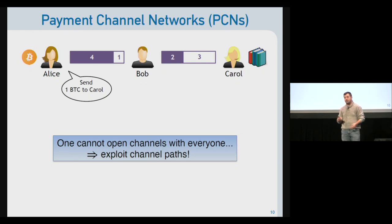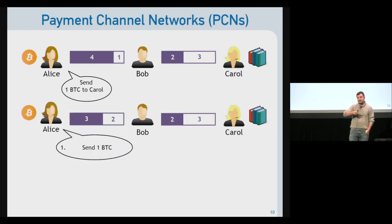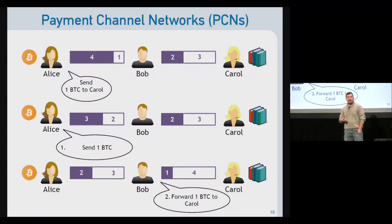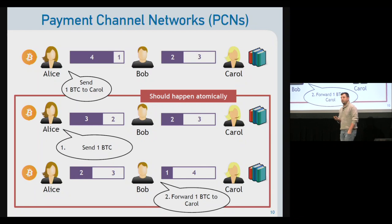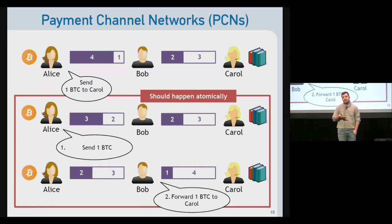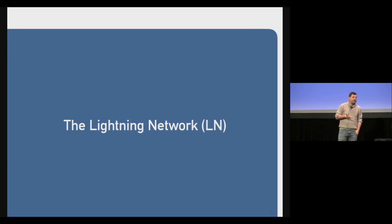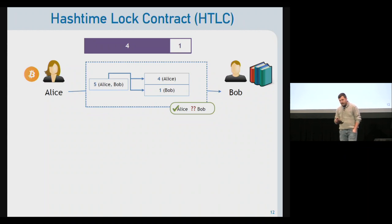Imagine Alice wants to pay Carol. She sends one bitcoin through her channel with Bob, who then forwards that bitcoin to Carol. For this to work in practice, the whole operation must be atomic — Bob should get money from Alice if and only if he has actually paid Carol. This atomicity challenge is what the Lightning Network has tackled.